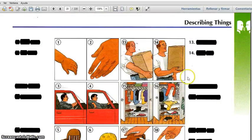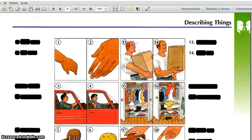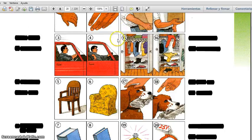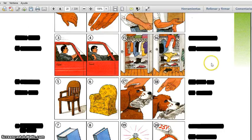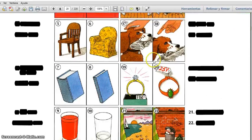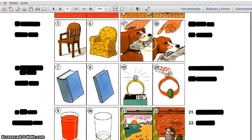Number thirteen: heavy box. Number fourteen: light box. Fifteen: neat closet. Sixteen: messy closet. Seventeen: good dog. Eighteen: bad dog.